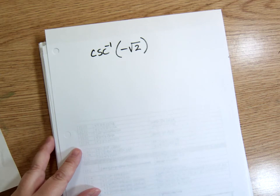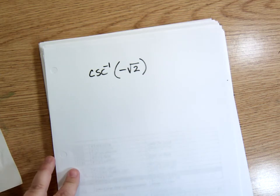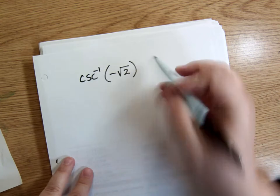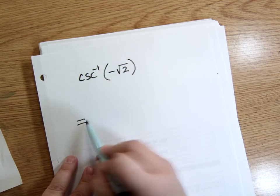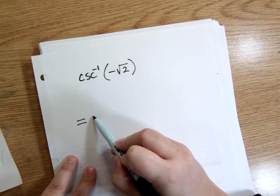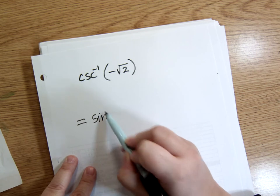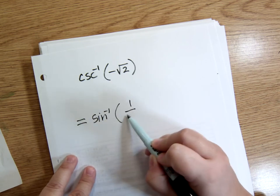Okay, so if I have inverse cosecant of negative square root of 2, then that's the same thing as inverse sine of 1 over that.